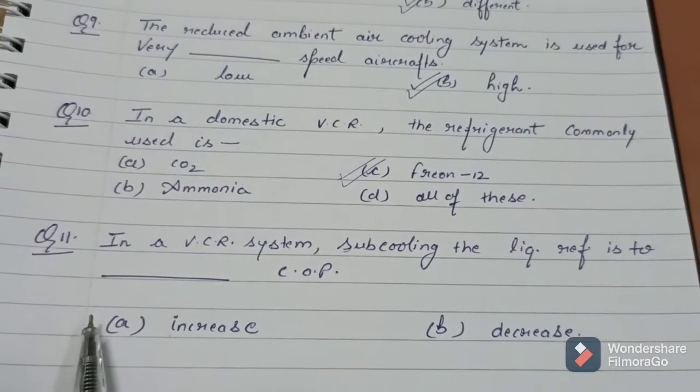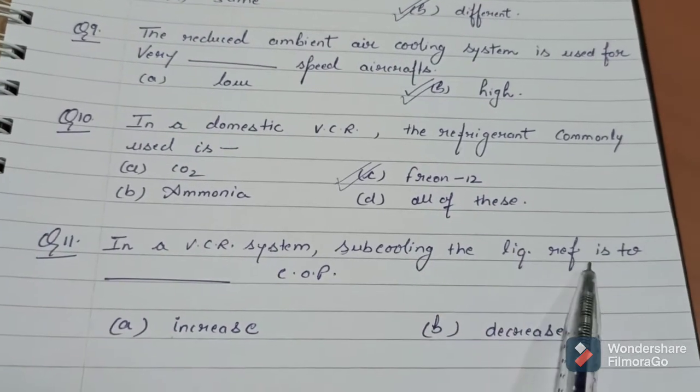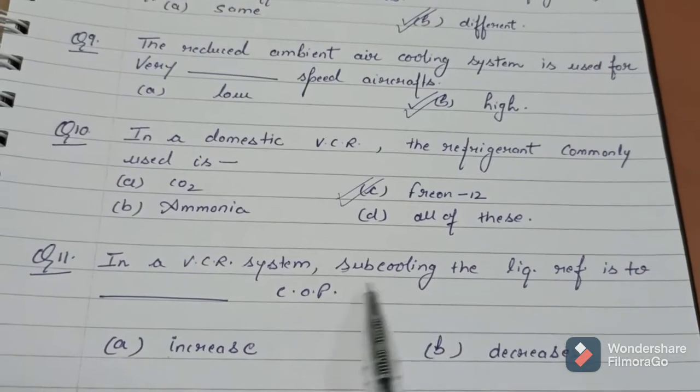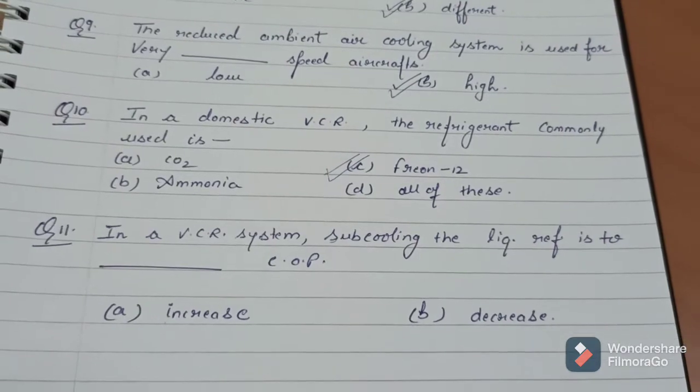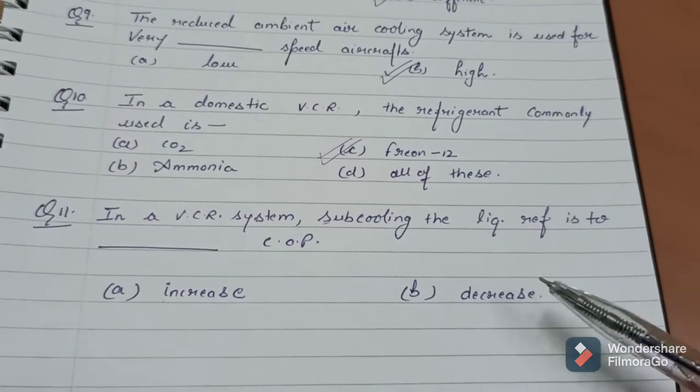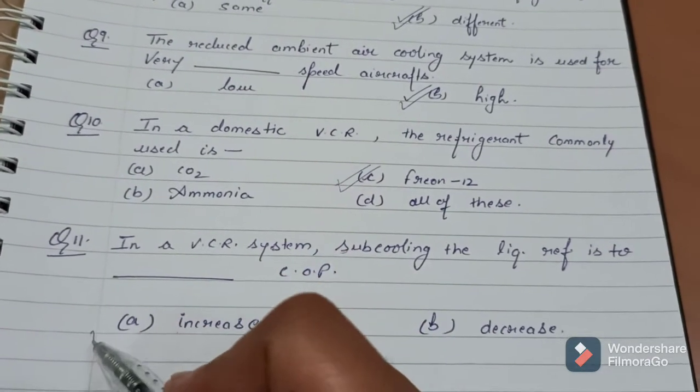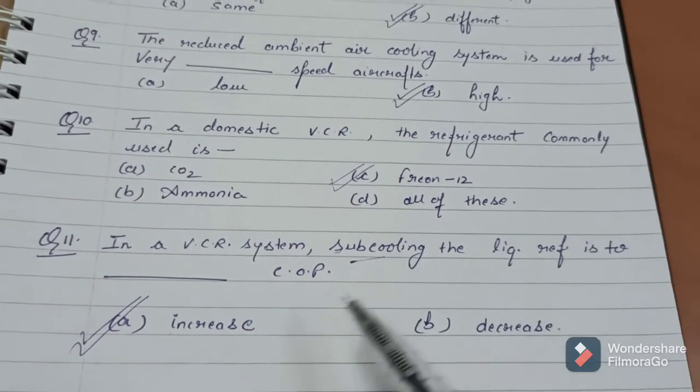Coming to question number 11. In a VCR system, subcooling the liquid refrigerant is to dash COP. When we do subcooling in VCR system of liquid refrigerant, do we increase COP or decrease it? The answer is that we increase the COP with the help of subcooling.